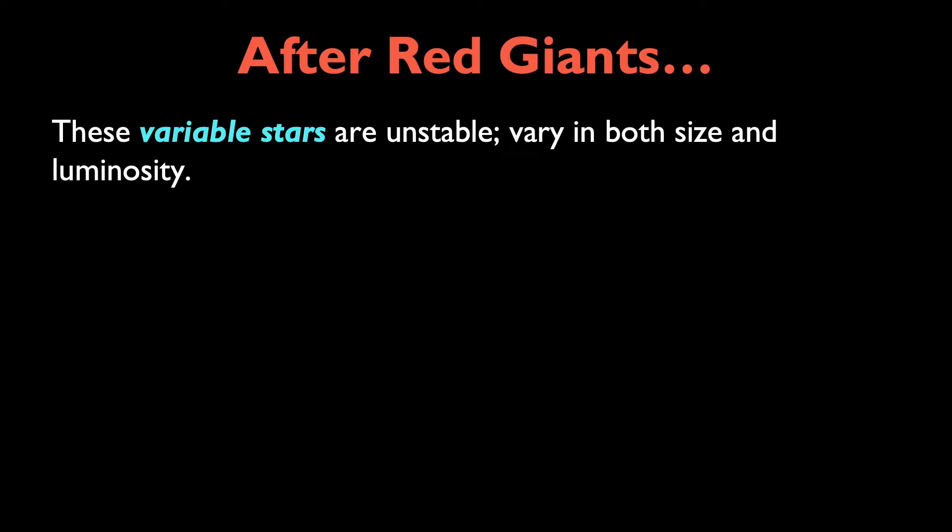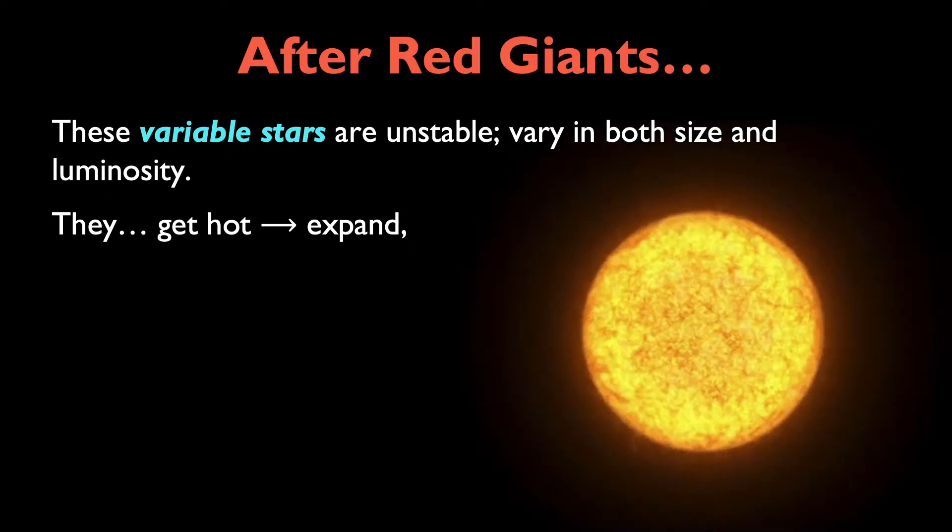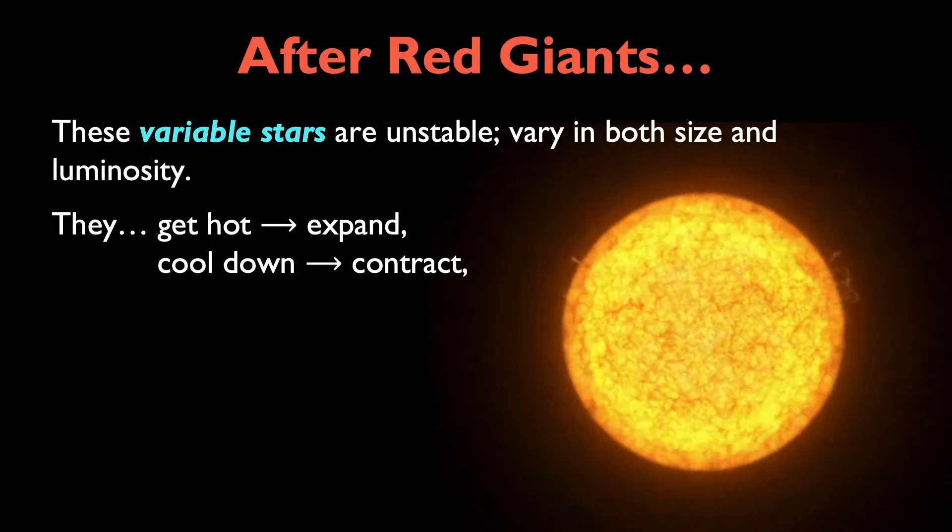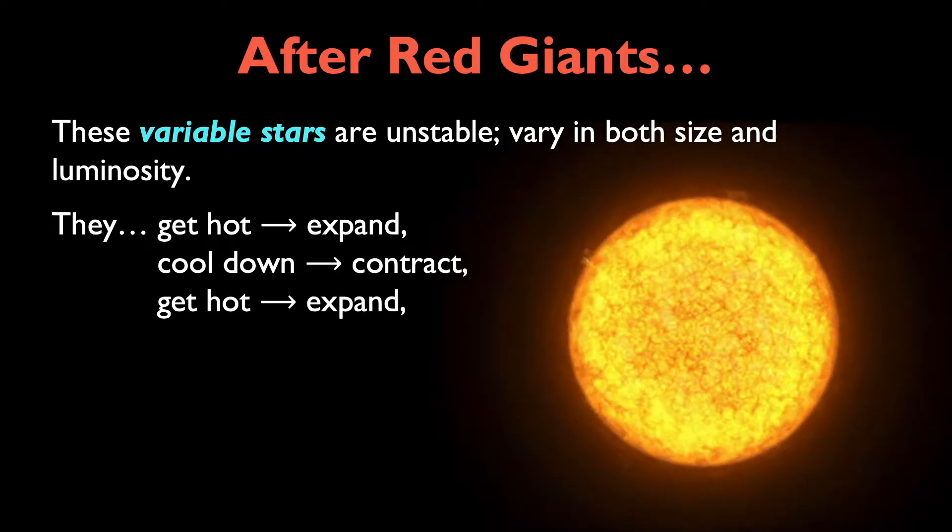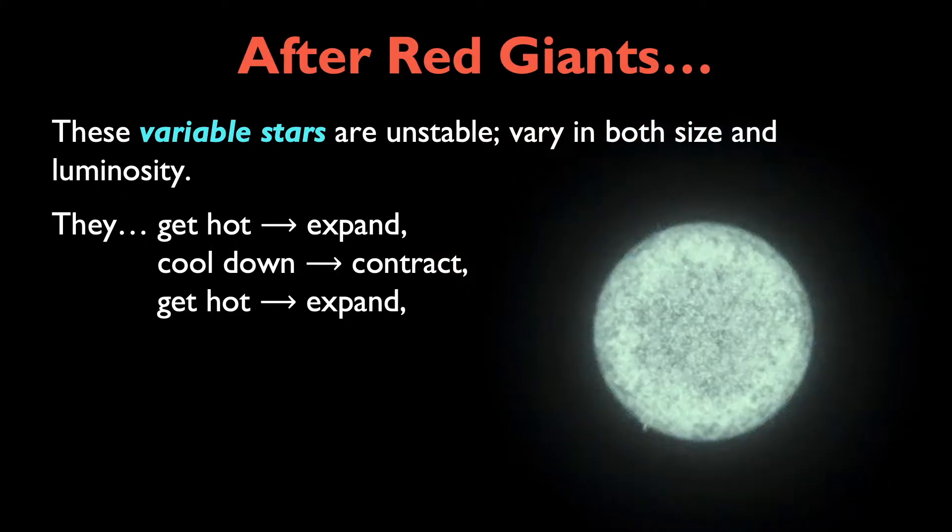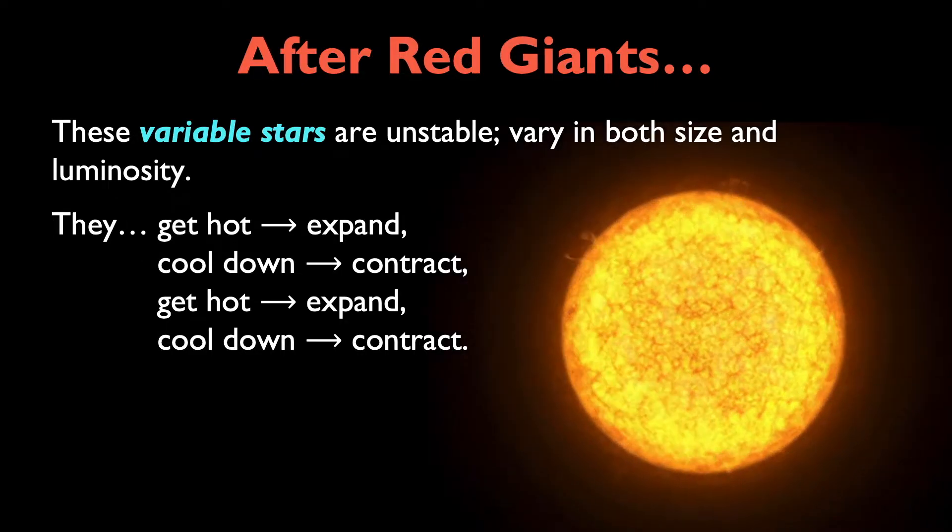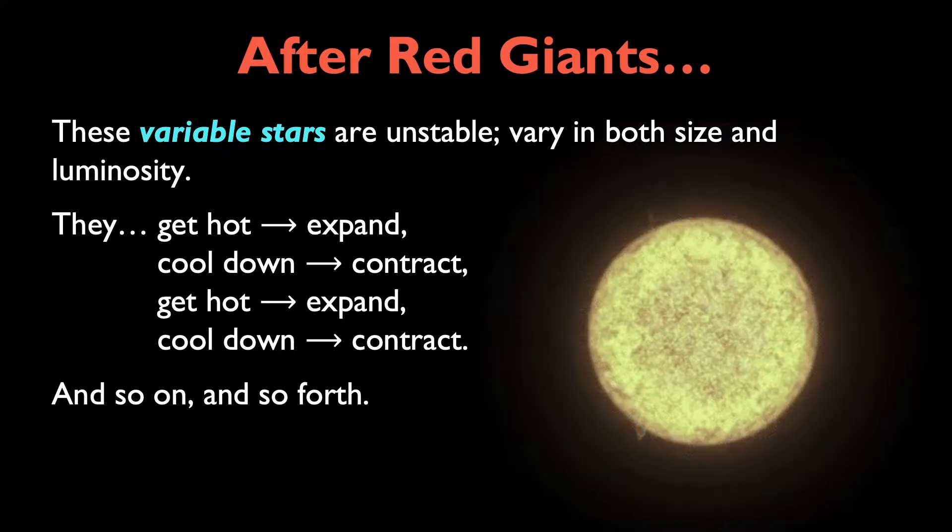Now these are variable stars and they are unstable. The reason we call them variable stars is because they vary both in size and luminosity at this stage of their evolution. They get hot, so they expand, but they cool down from that expansion, so they contract. The contraction causes them to heat up again, so they expand again. Then they cool down again, and then they contract again. Then they heat up again, so they expand again, and then the cycle just continues, and so on and so forth.